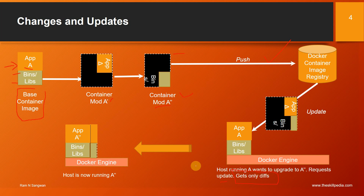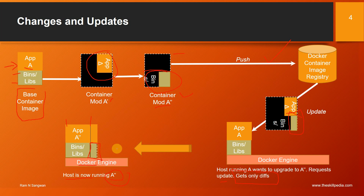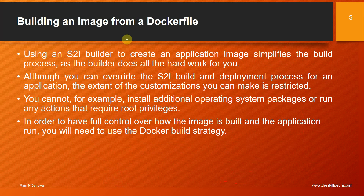The important point here is that Host A, wanting to upgrade to A-double-dash, only gets the differences. After the modified changes are pulled from the registry, the Docker engine will have the running container A-double-dash, and only the updated part is pulled. The existing part already present is not affected — only the new modified layer is pulled. That's why people say that running containerized applications is quite fast.